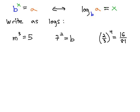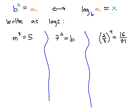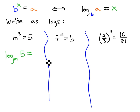When we write these three problems as logarithms, we'll write log — really small, we'll write the base from the problem, which is a base of m. Inside the log, we write the answer of 5, and the logarithm will always equal the exponent, because a log is an exponent — it always equals the exponent.